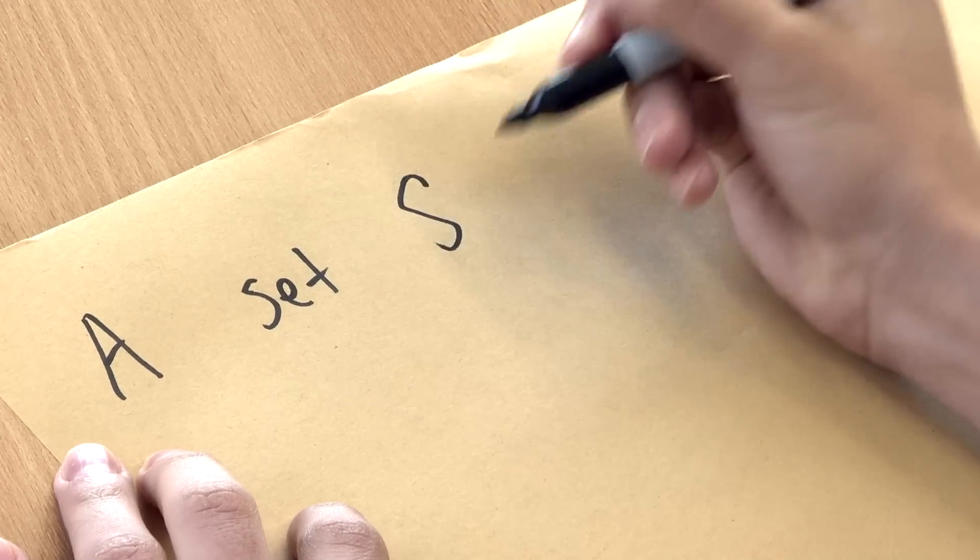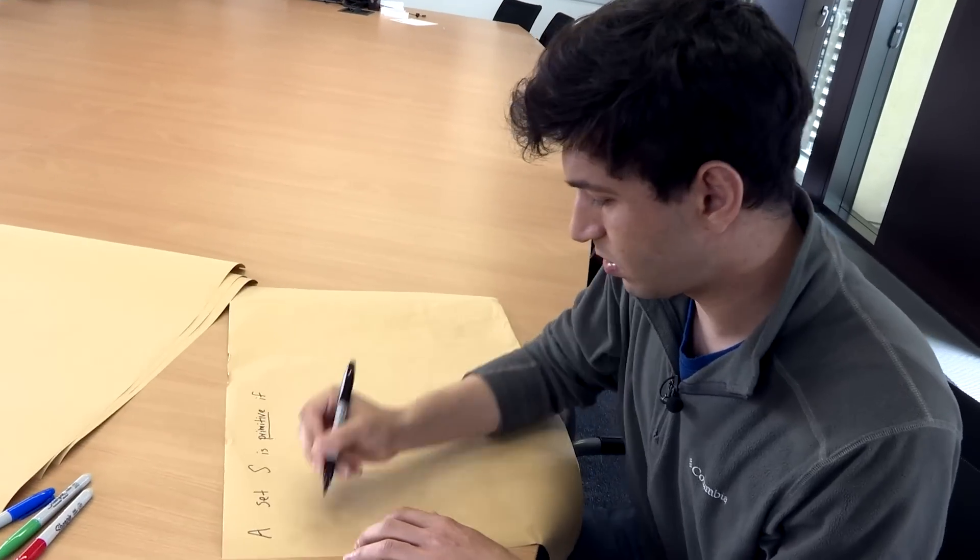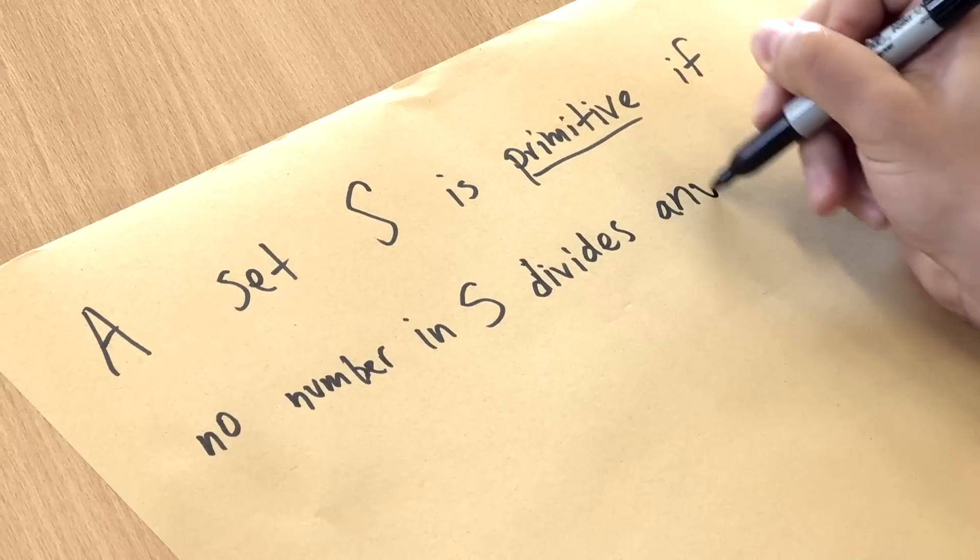Let's start with a definition. We'll say that a set S is primitive if no number in S divides any other. So that's just saying that if we have two numbers in our set that are different, say a and b, that means the ratio a over b and b over a are never a whole number. So if four and two are in the set, the set is not primitive. Right, because four is a multiple of two. I'm imagining there are an infinite number of primitive sets.